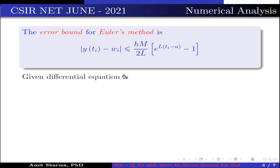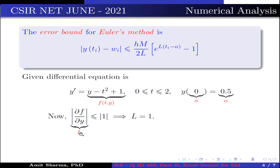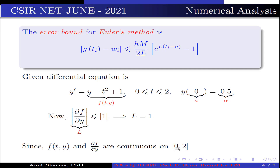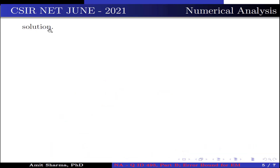The given differential equation is y' = y − t² + 1, represented by f(t, y), with 0 ≤ t ≤ 2 and y(0) = 0.5. Here a = 0 and α = 0.5. Now |∂f/∂y| ≤ 1, which is represented by L, so L = 1. Since f(t, y) and ∂f/∂y are continuous on [0, 2], by the existence and uniqueness theorem, the differential equation has a unique solution.